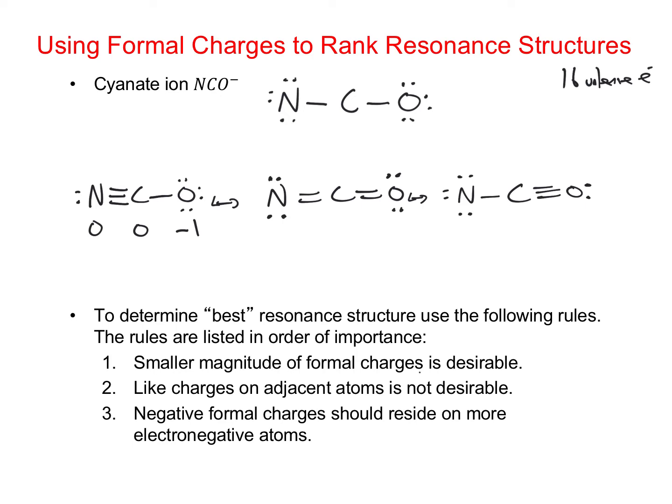In the middle structure: nitrogen has 5 valence electrons, 4 lone pair electrons and 2 sticks, so 5 minus 6 gives negative 1 on the nitrogen. Carbon still has 4 sticks, so its formal charge is 0. Oxygen has 6 valence electrons minus 4 lone pair electrons and 2 sticks, giving a formal charge of 0 on the oxygen.